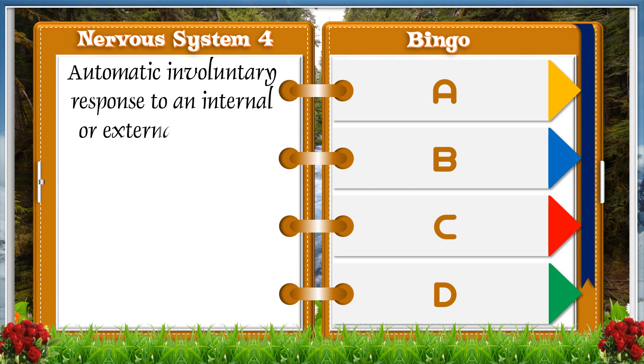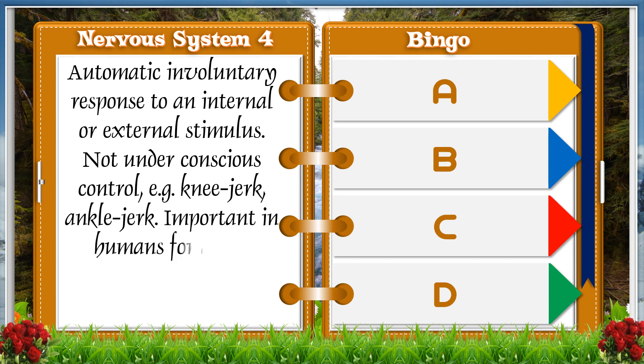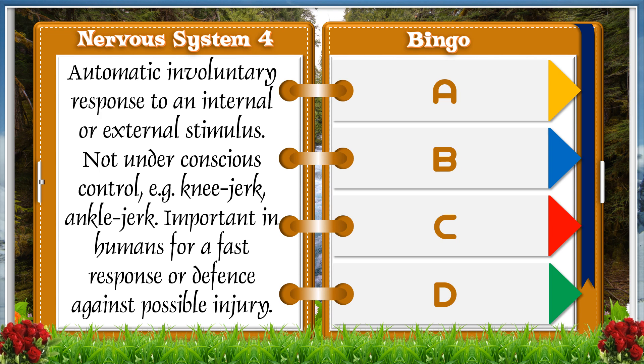Automatic involuntary response to an internal or external stimulus not under conscious control. For example, knee jerk or ankle jerk. Important in humans for a first response or defense against possible injury.